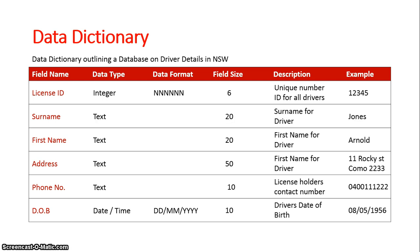If the format is self-explanatory and it's just characters side by side, we don't need to fill in the date format area. Basically, all we're doing in a data dictionary is explaining the different fields within our database.